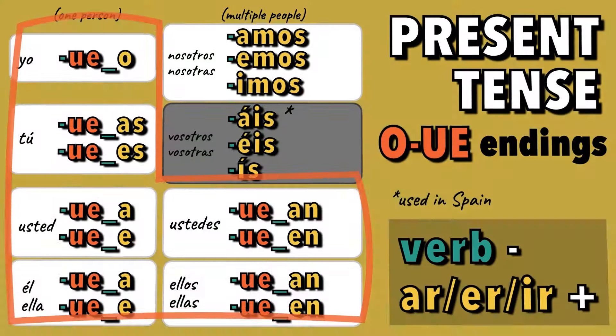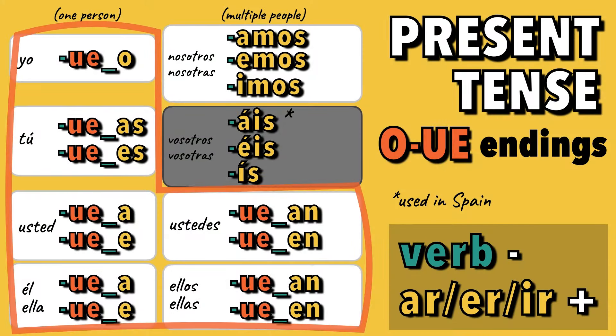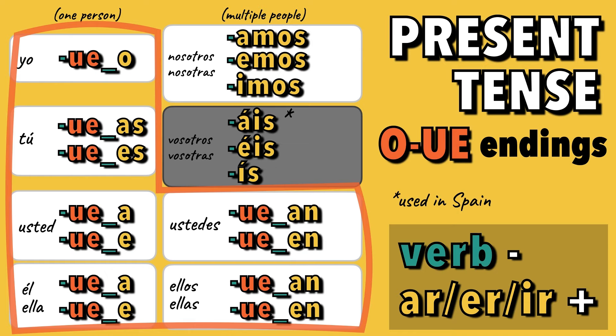To review, O to UE stem-changing verbs have an additional change in the present tense. The O will change to UE in the second to last syllable. This change doesn't occur in the nosotros or vosotros forms.